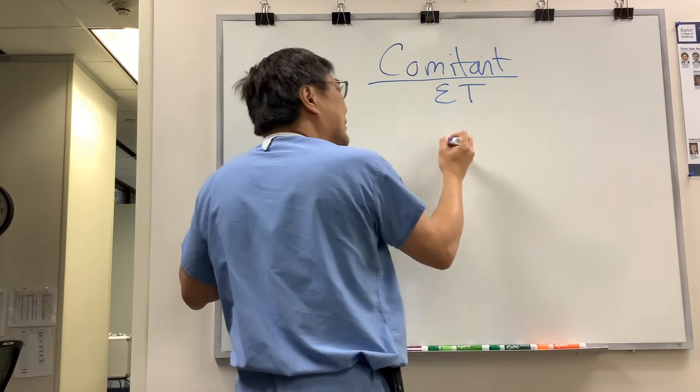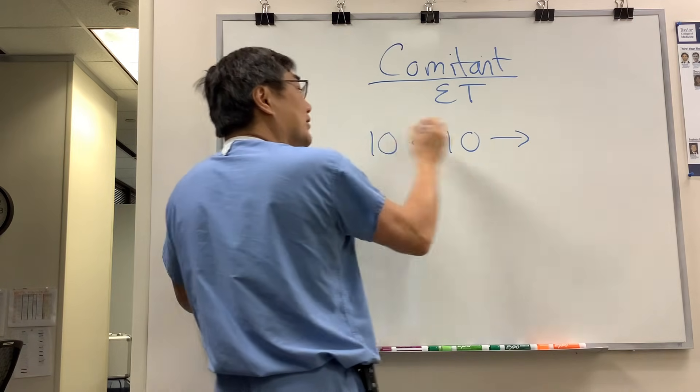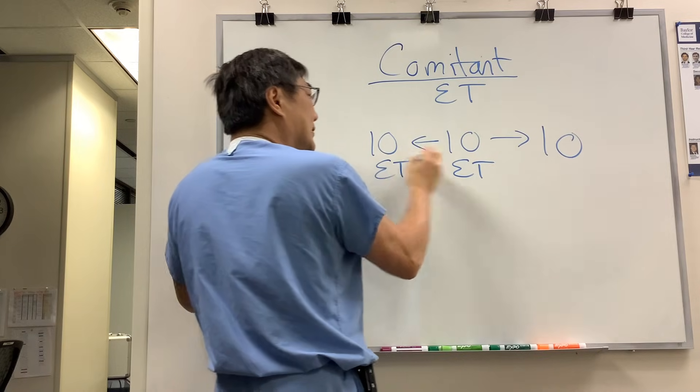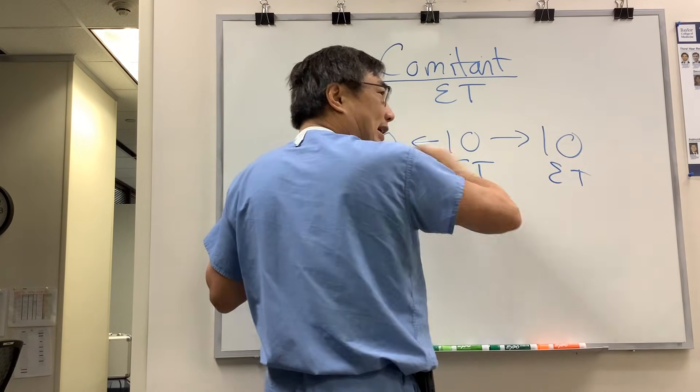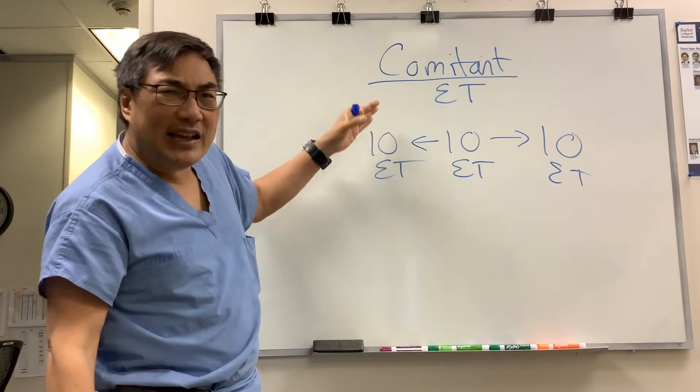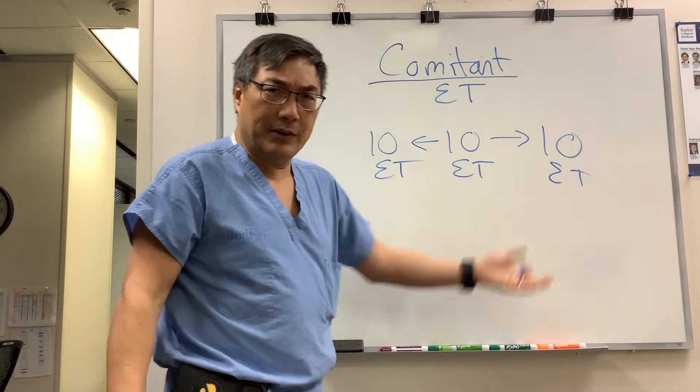Comitant means that the deviation is the same in all directions of gaze. So 10 ET, 10 ET, 10 ET - this is a very comitant deviation. It can be like 8 to 10, it can be plus or minus 2 or 3, that's still comitant. It doesn't have to be the exact same number.